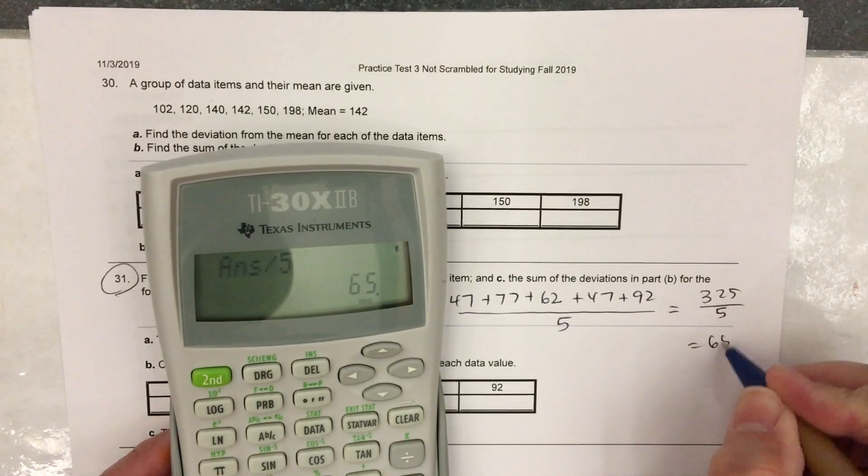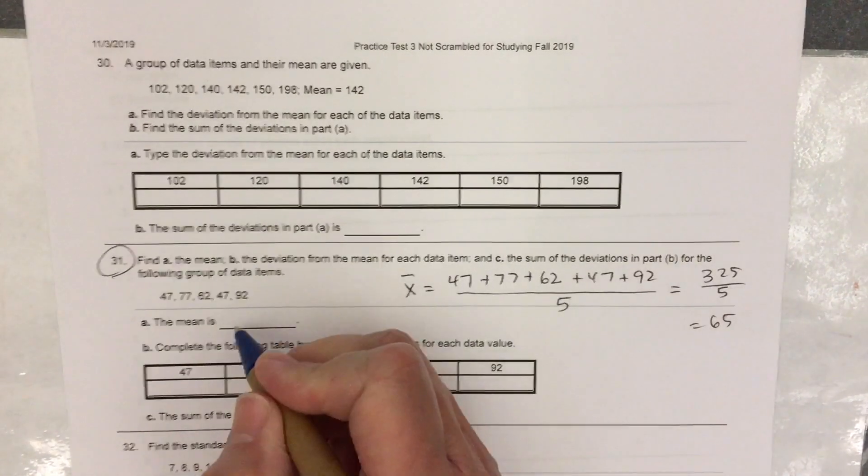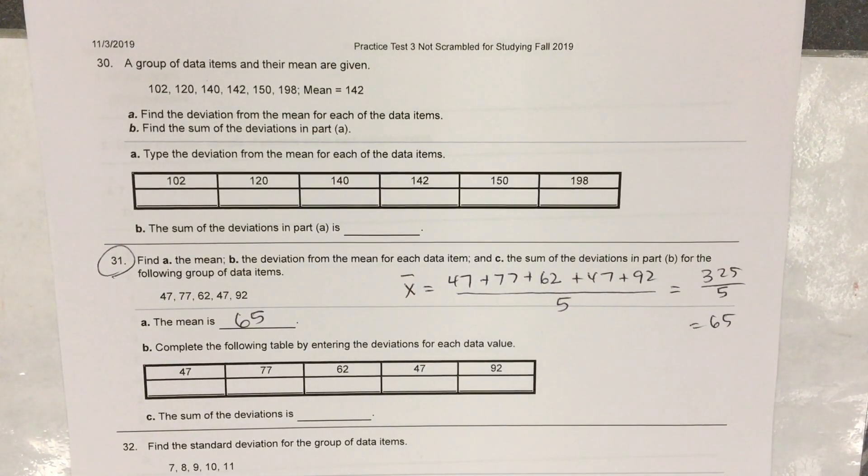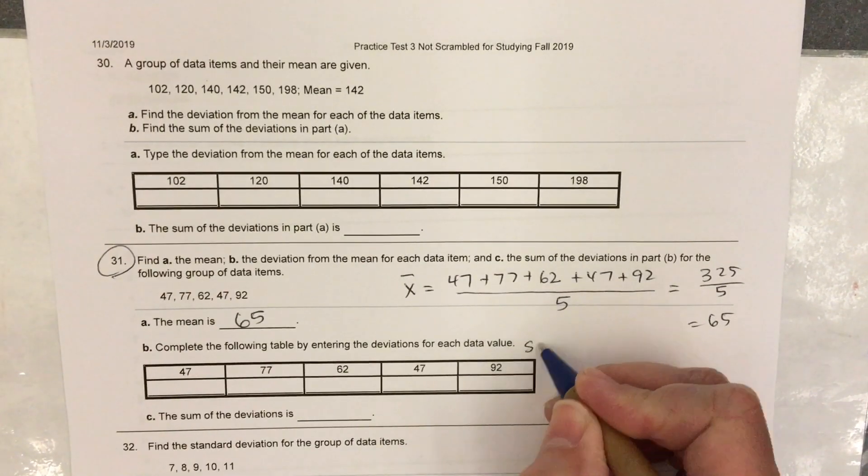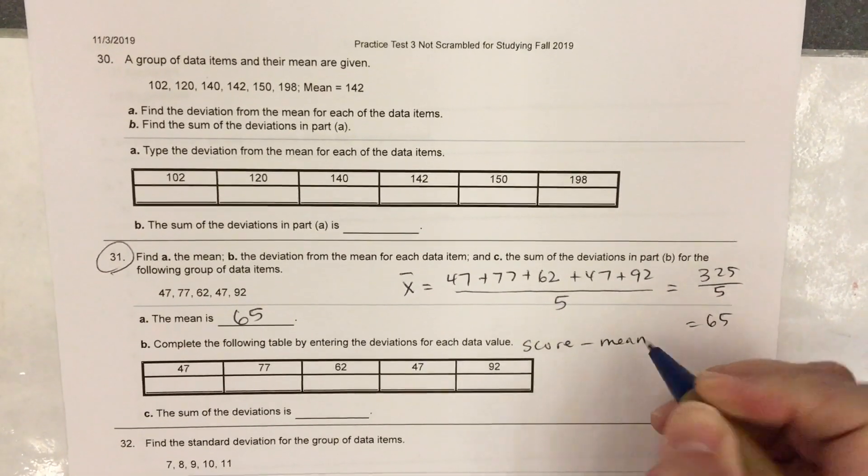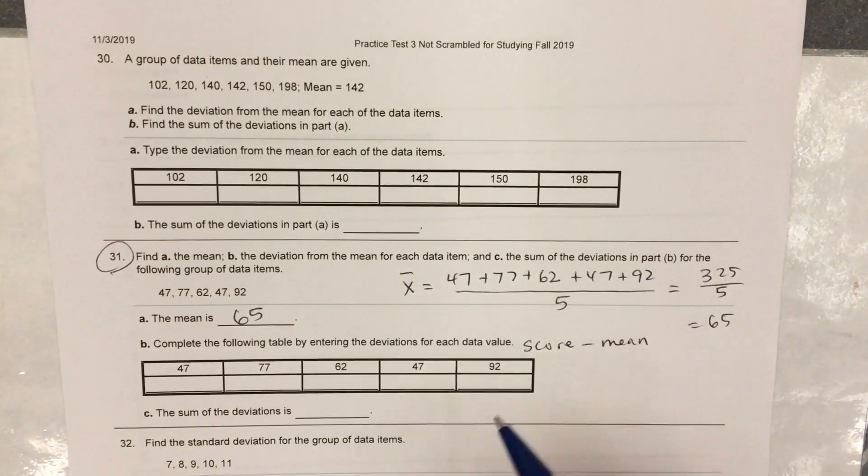65 is the mean. For part B, you have to do score minus mean. If you do it the other way, it's going to mark them wrong.